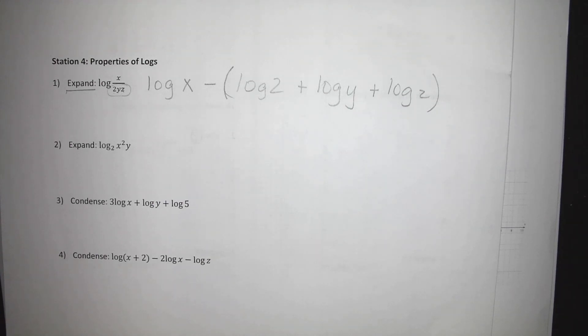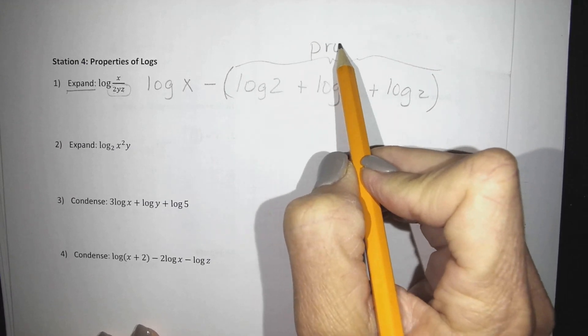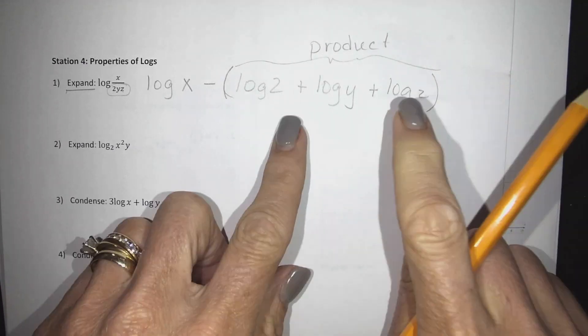So again the quotient rule tells you to subtract, we've done that. This part is the product rule which has the addition.